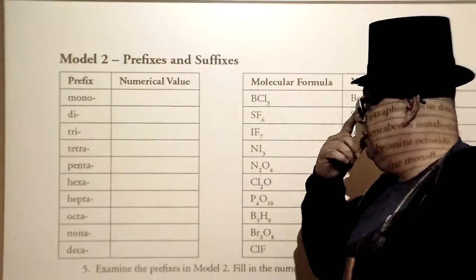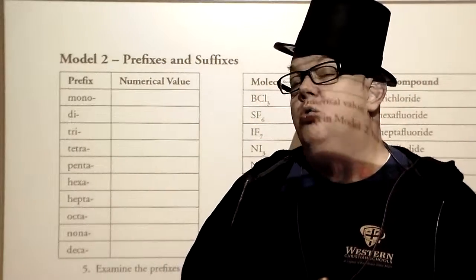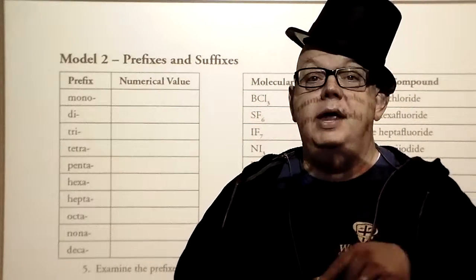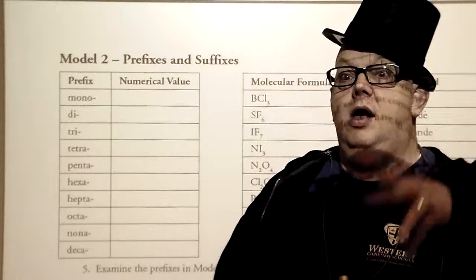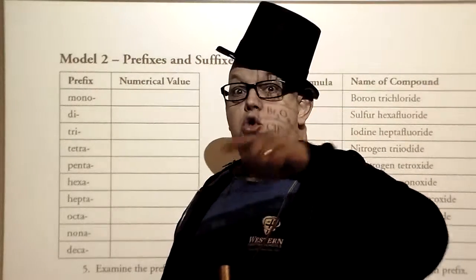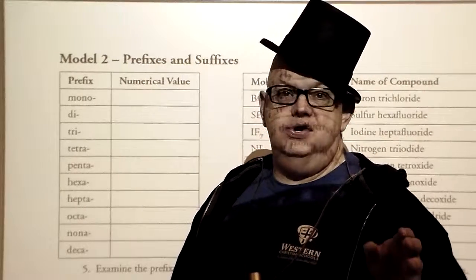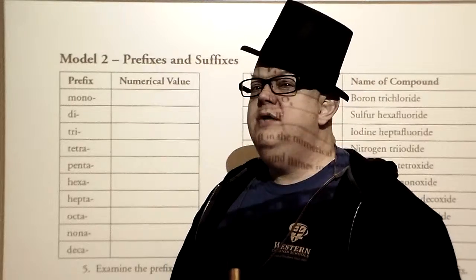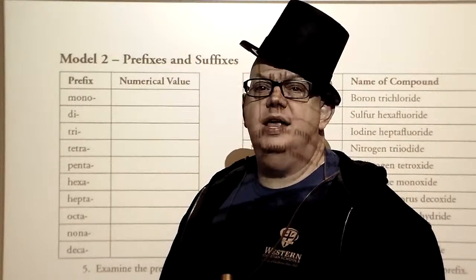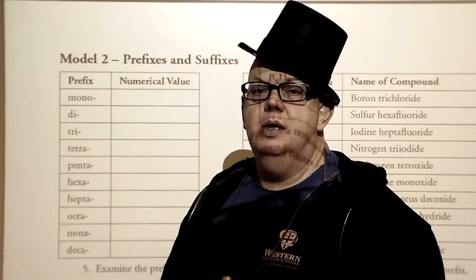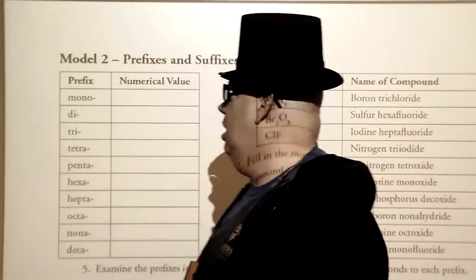Okay, this is talking about naming molecular compounds. We have talked about naming binary ionic compounds. We've talked about naming compounds that have Roman numerals in them like iron 2 oxide versus iron 3 oxide. We've talked about compounds that have polyatomic ions in them.